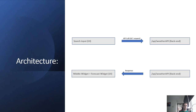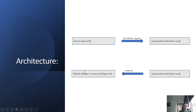Now let's focus on the architecture. There is a search input on the UI where users can type the city they're looking for. By clicking the search button, an API call — a GET request — is made to the API slash weather API on our back-end service. On the back-end we make a request to weatherapi.com and the response is visualized on the UI: the middle widget shows the weather condition, and the forecast widget shows information for the upcoming 10 days.